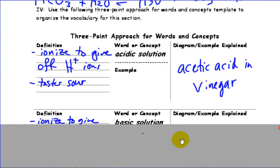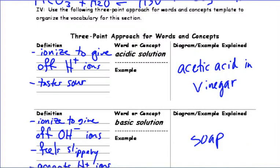So acetic acid in vinegar. Vinegar is basically made up of acetic acid dissolved in water. So that's an acidic solution.